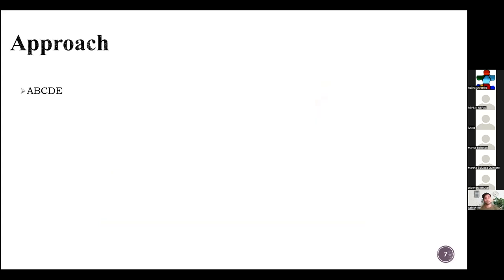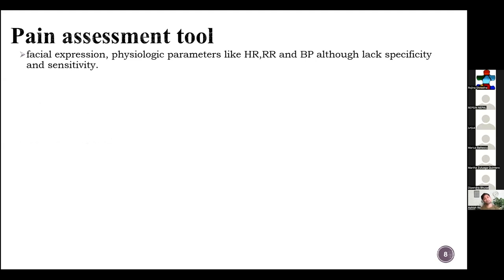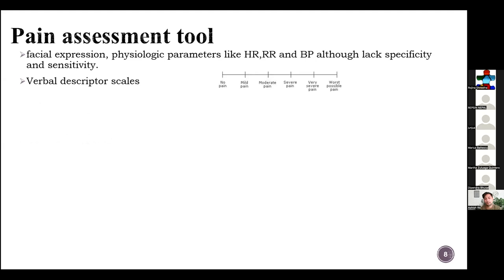How to approach the patient: being an emergency medicine trainee, we always approach the patient using ABCD. For most presentations of acute abdomen or abdominal pain, pain management comes first, then focused assessment. We have various pain assessment tools — facial expressions, physiologic parameters like heart rate, respiratory rate, and blood pressure, though these lack specificity and sensitivity. We also have verbal descriptors and numerical scales ranging from no pain to the worst possible pain, and visual analog scales.